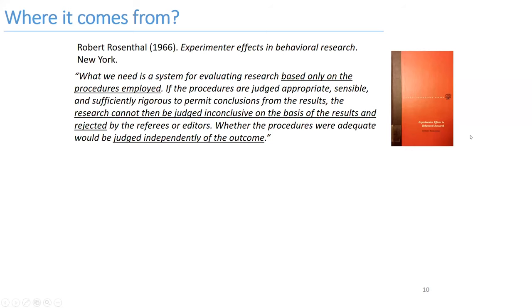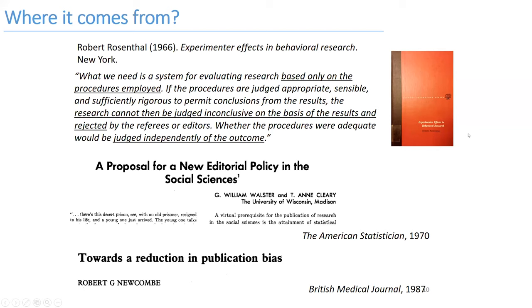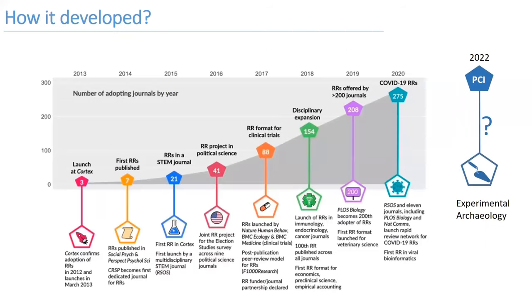The history of this initiative goes back to the 1960s in psychology, and the history of pre-registration and pre-specification goes back much further. This idea has been floating around for about 50 years in different forms — in psychology, the social sciences, and in medicine, where it led to the advent of clinical trial registration. But it wasn't until 2013, when we launched the format at the journal Cortex — a neuroscience journal where I'm an editor — that we've seen the real growth of registered reports. We've seen steady growth across psychology, neuroscience, political science, ecology, medicine, and various other sciences through to 2019 and 2020. With the advent of the pandemic, the initiative also launched to help address the challenges of COVID-19, ensuring a reproducible and reliable corpus of knowledge addressing different aspects of the pandemic.